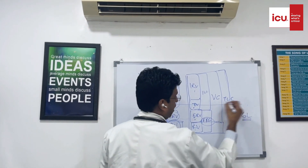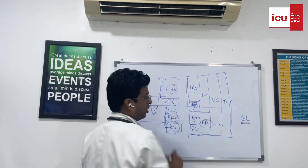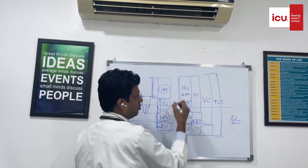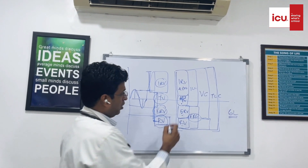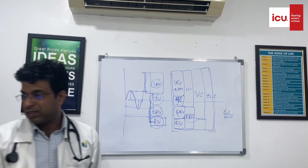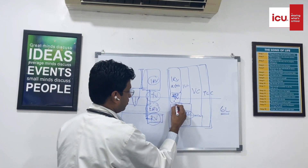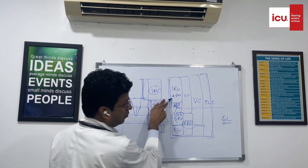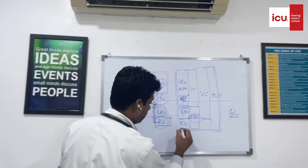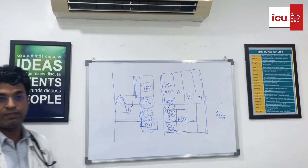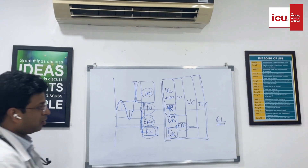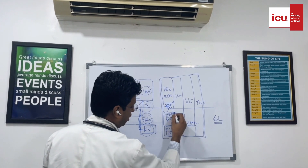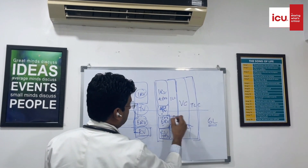Tidal volume is 500 ml. Inspiratory reserve volume is around 2500 ml. Expiratory reserve volume is around 1500 ml. Residual volume is 1500 ml. So functional residual capacity is 3 litres, total inspiratory capacity is 3 litres, and vital capacity is 4500 ml.